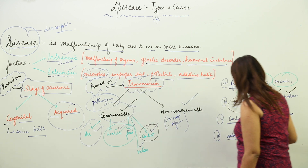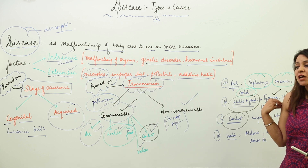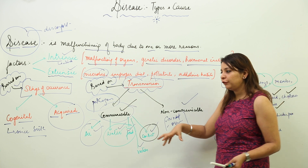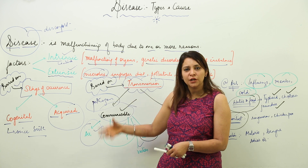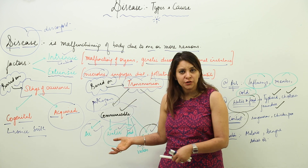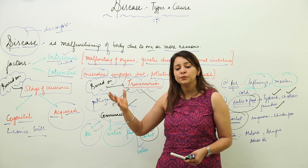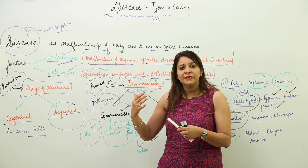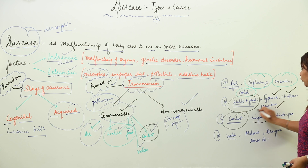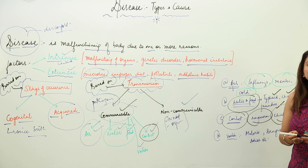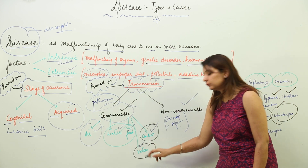Certain diseases spread through physical contact, either directly or indirectly. If a person is suffering from a disease and you shake their hand, or use their hairbrush or toothbrush, pathogens may spread to your body. Diseases that spread by contact include ringworm and chickenpox.